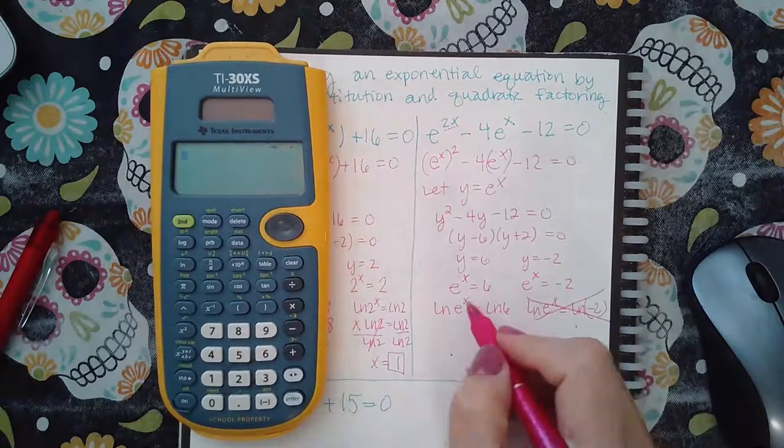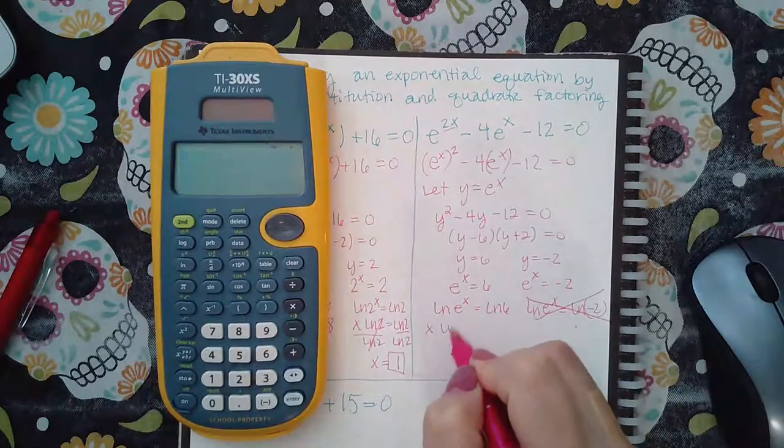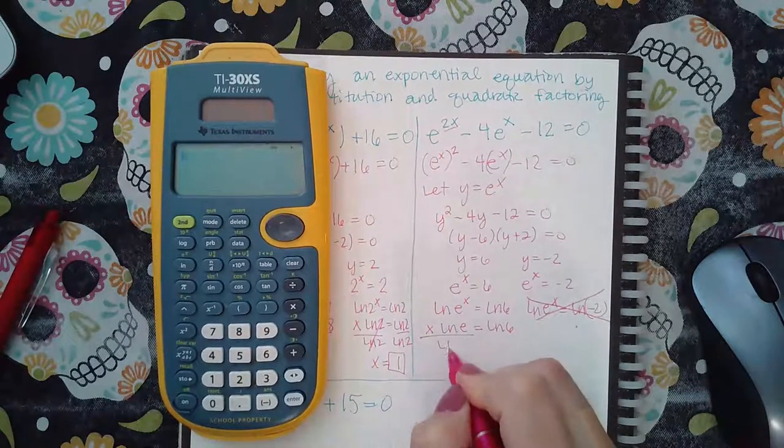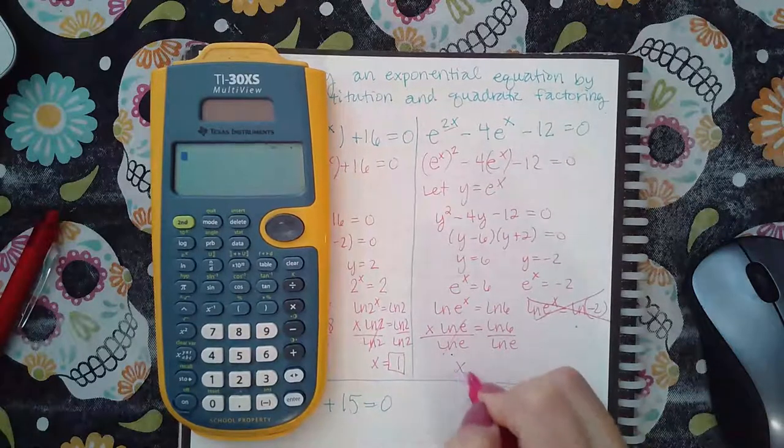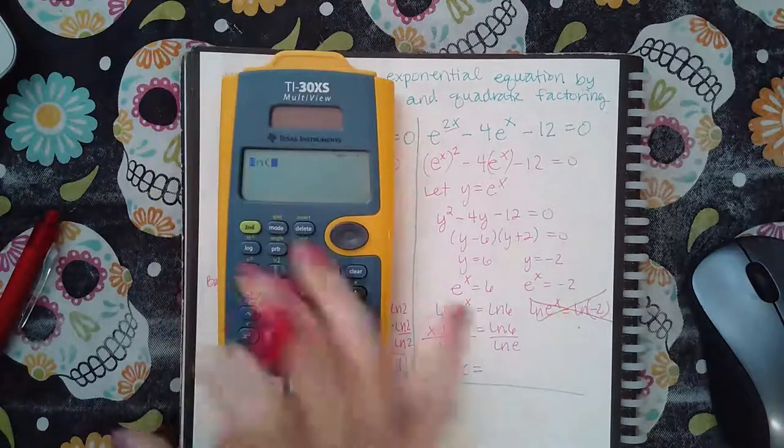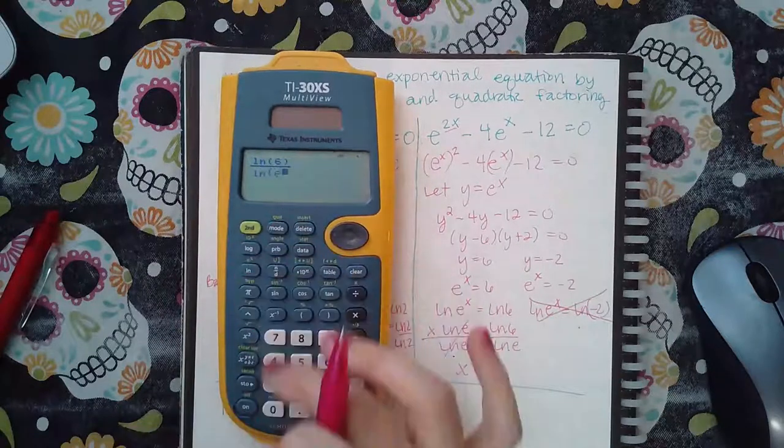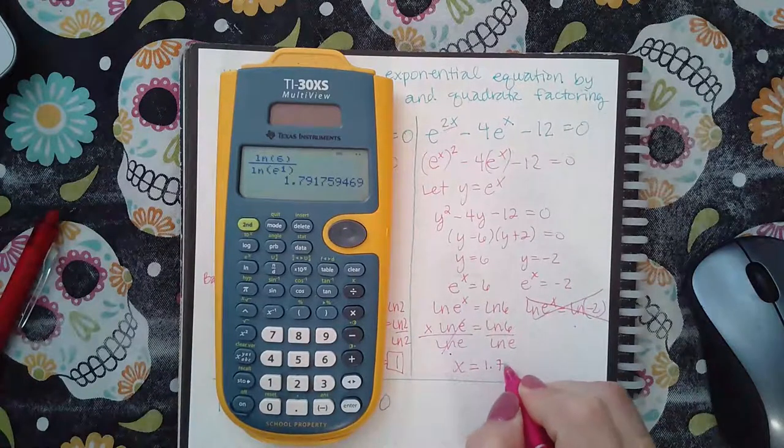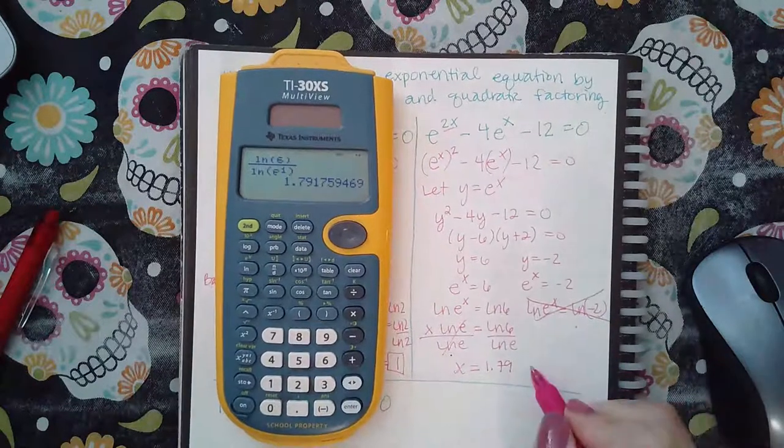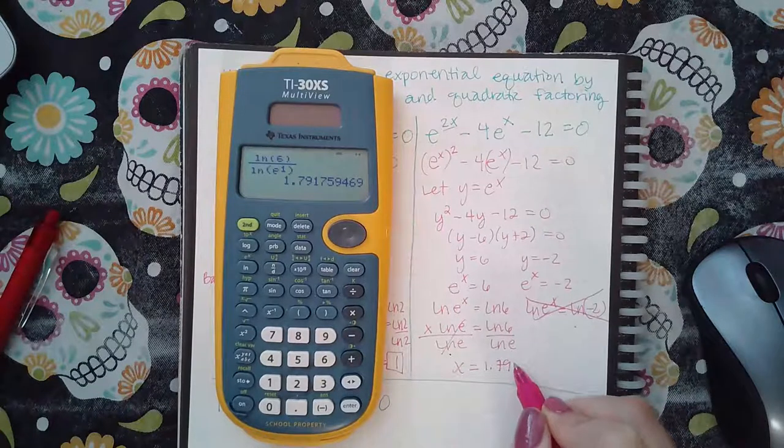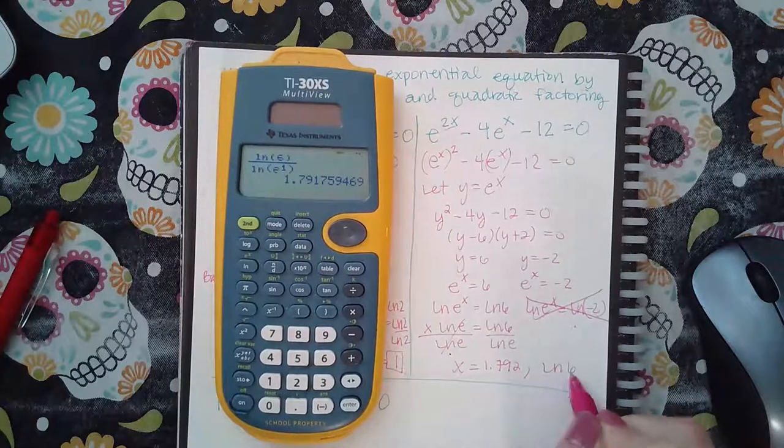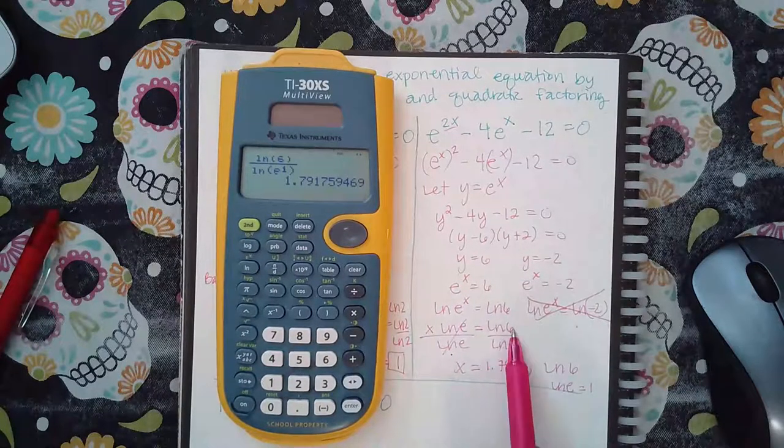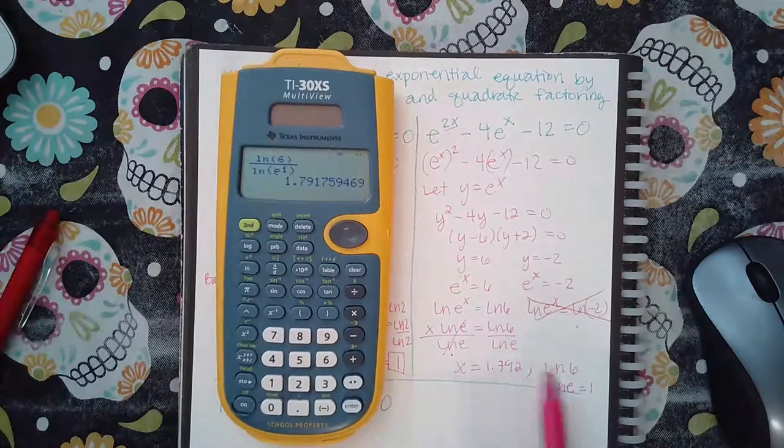So if we continue here, we'll bring the x down, we get x times ln of e, we get ln of 6, and then we divide by ln of e. So we get x equals ln of 6 divided by ln of e is 1.79. If they want the exact answer, you can just tell them it's ln of 6. Because the ln of e by itself is actually equal to 1. So you're basically saying ln of 6 divided by 1 is ln of 6.